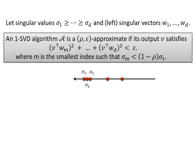If it satisfies the following thing pictorially, define a threshold (1-ρ) times the top singular value, and then call all the singular vectors to the right of this threshold to be small singular vectors. Then the algorithm is the (ρ,ε) approximation if the output vector correlates with all small singular vectors by at most ε. In such a case, we say the algorithm is (ρ,ε) approximate 1SVD.